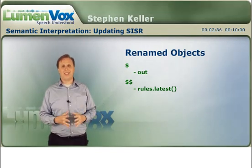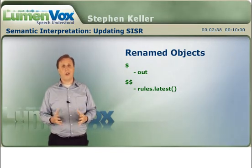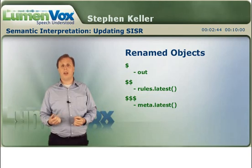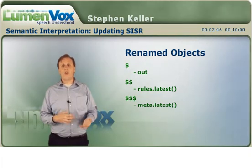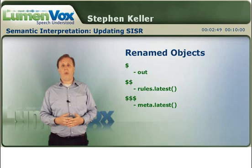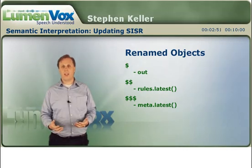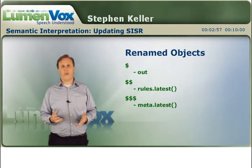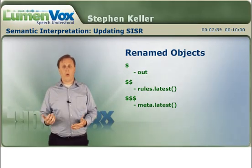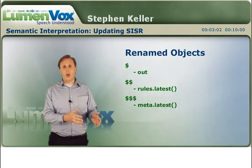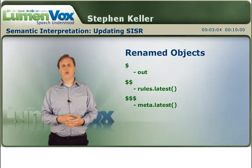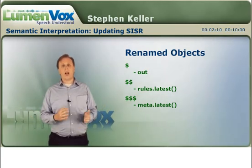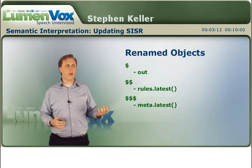Because these old SISR specs just love the dollar sign character, we also get triple dollar sign. Triple dollar sign equaled the meta information for the current rule. We've replaced that whole concept with the object called 'meta', which we talked about in the last video. So now if you want the meta information for the current rule variable, you say meta.current, and then you either choose text or score. So meta.current.text would be triple dollar sign.text, and meta.current.score would be triple dollar sign.score.